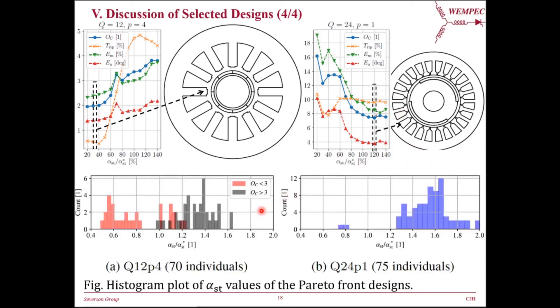As we can see, for the Q12P4 design, if a design has an objective value less than 3, it is likely to have a small alpha-st value. As for Q24P1 design, however, only 2 out of 75 designs have small alpha-st values. In conclusion, the stator tooth span angle alpha-st is an important geometric parameter for bearingless motors.